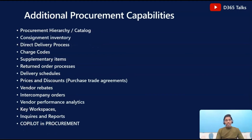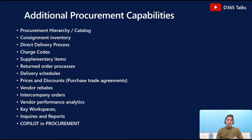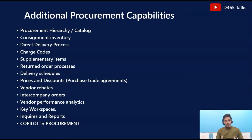We will also try to understand the various additional procurement capabilities. We will cover all the basic processes involved — right from procurement hierarchy and catalog, whether it is consignment inventory, which is a very important aspect within the procurement and sourcing module, and we will also talk about the direct delivery process where sales orders and purchase orders are linked and appropriate quantities and prices can be tracked. We will also talk about charge codes — both manual and automatic charge codes — using which you can track transportation, miscellaneous, or material handling charges as part of your procurement processes.